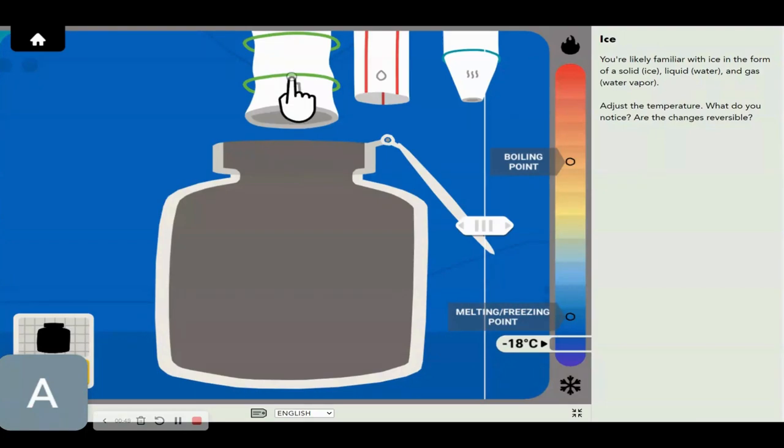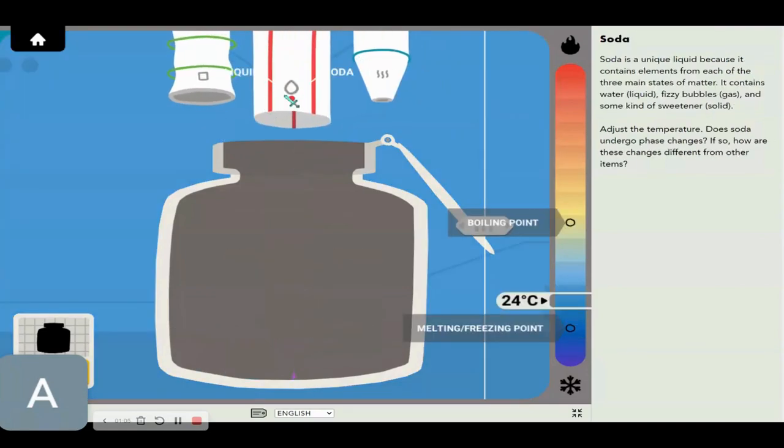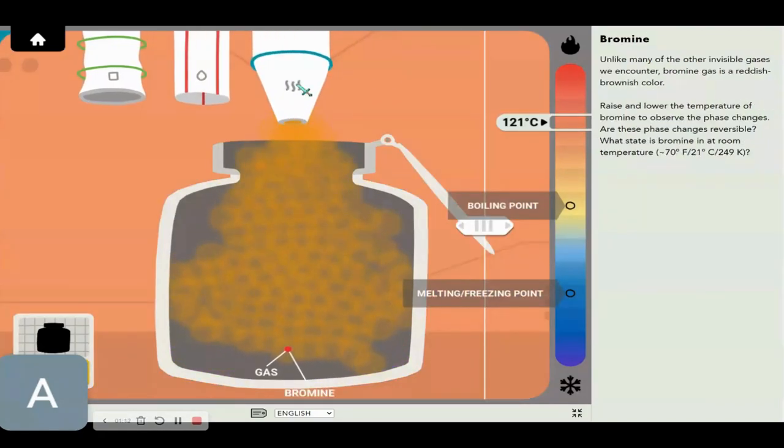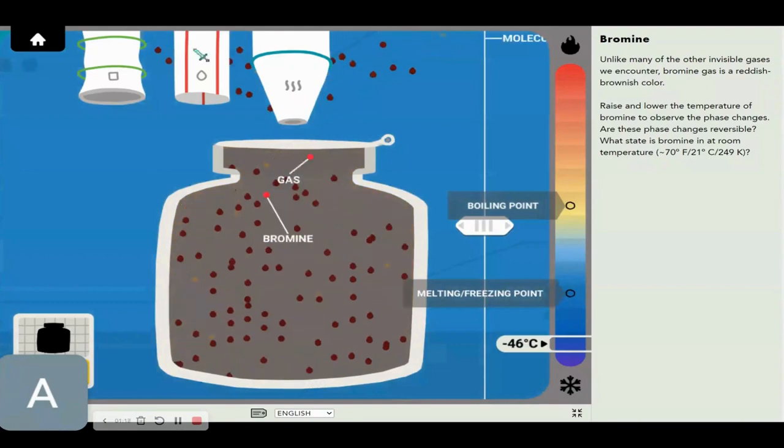So what is the state of matter? What are the states of matter? There are three basic states of matter. I mean, there are more, but we're not talking about them in this video - that's way too complex. Solid, liquid, and gas. Solid is basically this, it's solid. Liquid is like soda, it flows. And gas is something like bromine, air, oxygen, that kind of stuff.